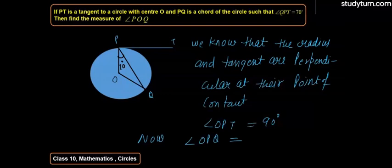angle OPQ equal to angle OPT minus angle TPQ, so this is equal to 90 degrees minus 70 degrees. So angle OPQ is equal to 20 degrees.